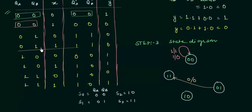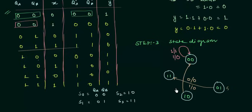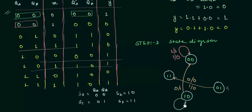When QA,QB = 1,0 meaning we are on S2, and input X=0, we move to next state 0,0 which is S0, with output 1 — so we write 0/1 on that transition. When on S2 and input X=1, we stay on S2 again, with output 1 — so we write 1/1 on that self-loop.